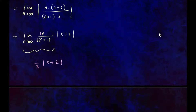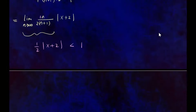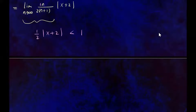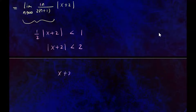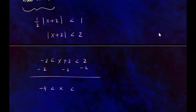For convergence in the ratio test, we want this to be less than 1, since the limit of a sub n plus 1 over a sub n must be less than 1 to converge. Multiplying both sides by 2 gives absolute value of x plus 2 is less than 2. Removing the absolute value, x plus 2 is bounded between negative 2 and 2. Subtracting 2 from all sides gives negative 4 is less than x is less than 0.